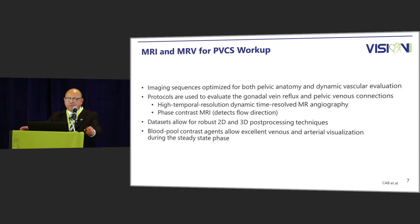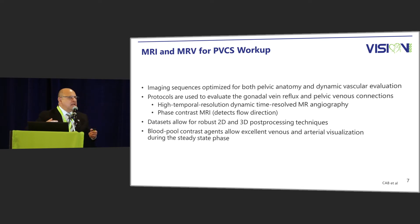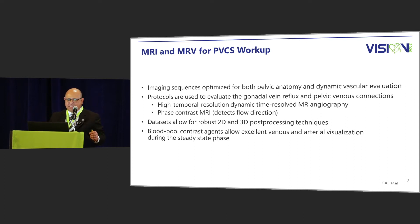MRI has imaging sequences optimized for pelvic anatomy — the uterus and ovaries can be exquisitely demonstrated, as well as dynamic vascular evaluation. Protocols assess gonadal vein reflux and pelvic venous connections using MR angiography, and sequences can detect direction of flow. The databases allow for robust 2D and 3D post-processing, and blood pool contrast agents show excellent venous and arterial visualization during a steady-state phase.